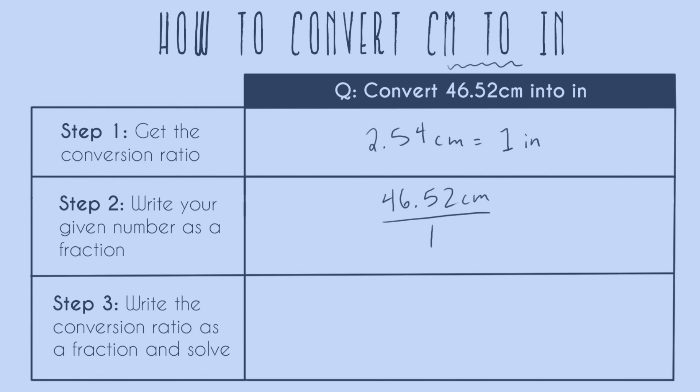And step three is to write the conversion ratio as a fraction and solve. So first we take our number down here. We know we're going to have some math and we figure that out by using our conversion ratio in step one. We need to focus on canceling. To end up in inches, we need to cancel out centimeters. Since centimeters is on the numerator here, it means we have to put it on the denominator here.